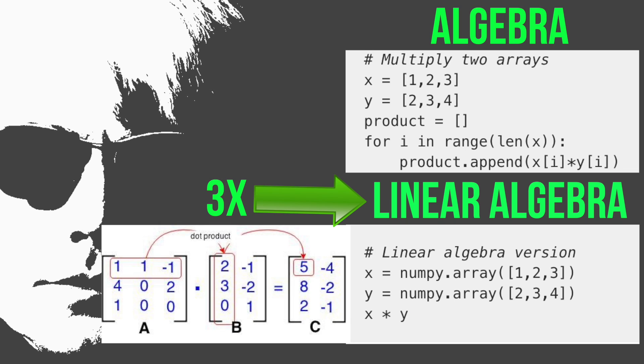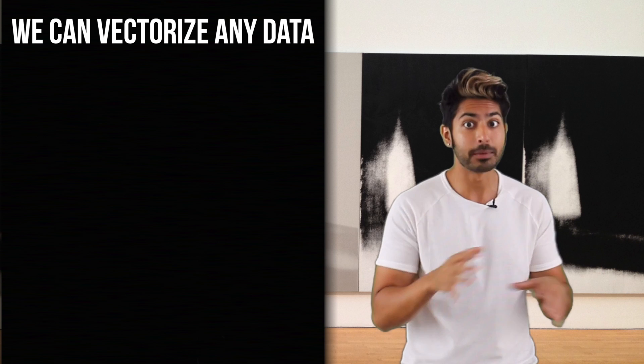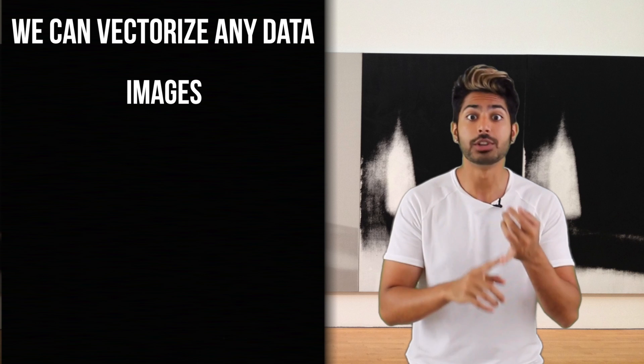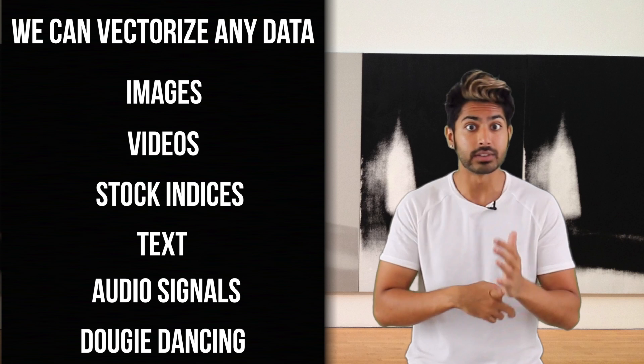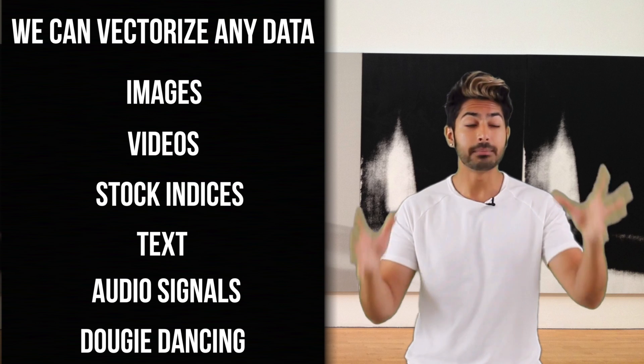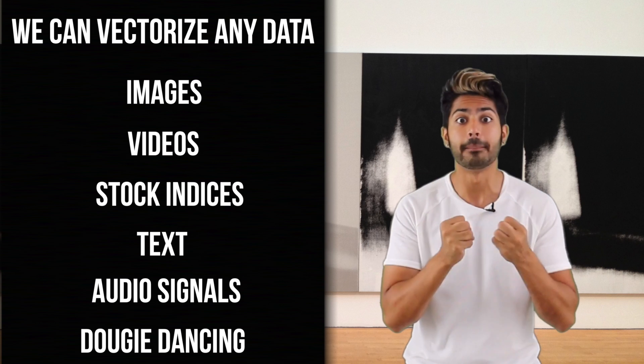The linear algebraic approach is three times faster in this case. Any type of data can be represented as a vector. Images. Videos. Stock indices. Text. Audio signals. Dougie dancing. No matter the type of data, it can be broken down into a set of numbers.